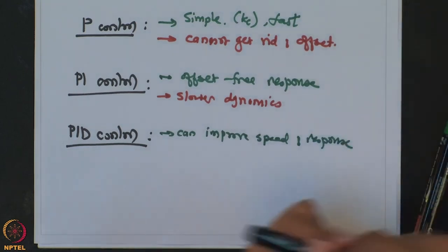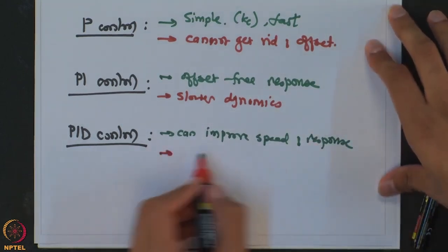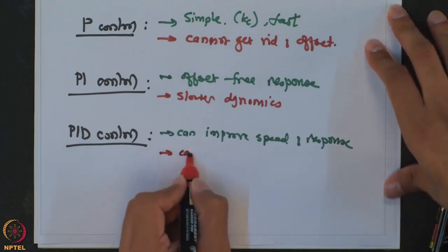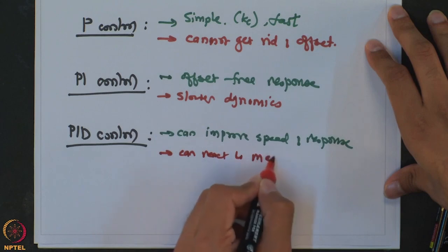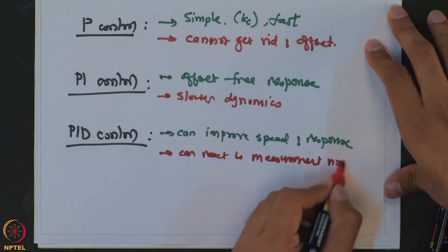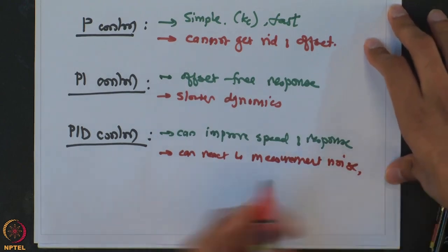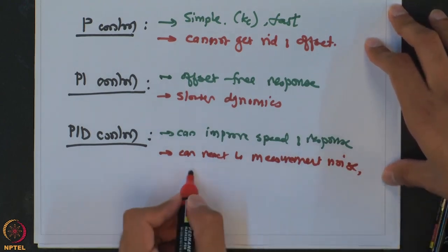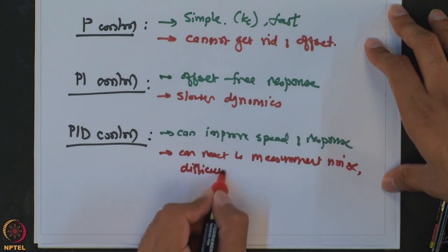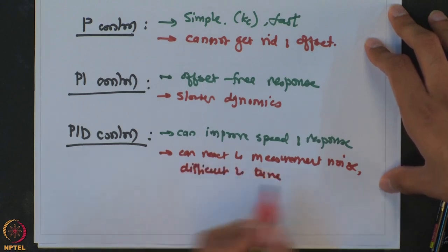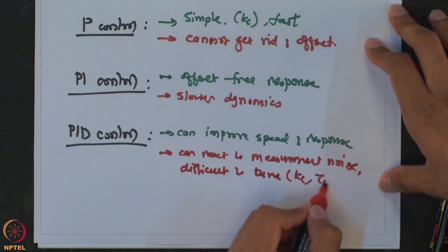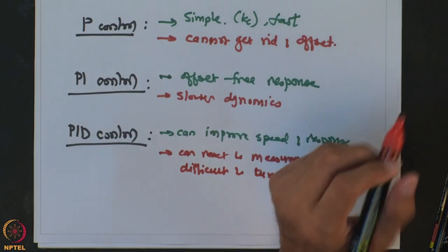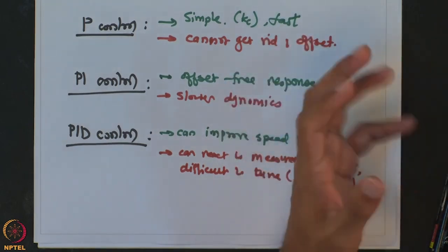But at the same time, the PID controller has limitations in terms of reacting to measurement noise, which is a very key thing. It may destabilize the process and is difficult to tune. The tuning problem means finding the best values of Kc, tau_I, and tau_D. It is like the controller has three different directions in which it has to optimize, so it becomes a difficult problem to select the best values of Kc, tau_I, and tau_D.